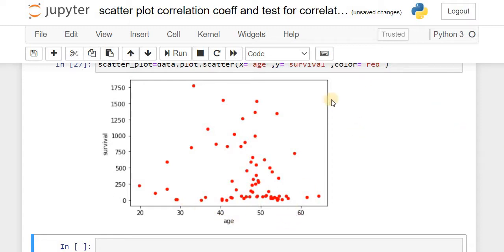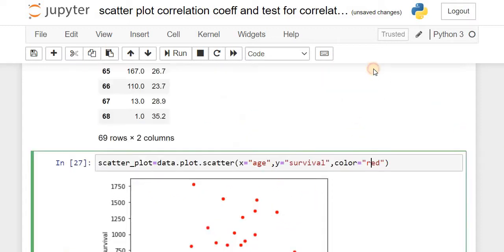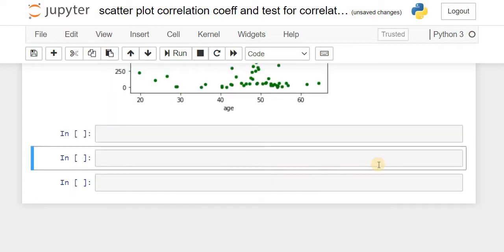Now let us change the color to green, and the plot is changed to green color. The rest of the things are the same.